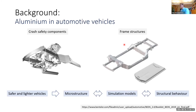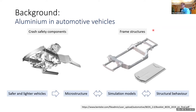The background for this study is the extensive use of aluminium alloys in automotive vehicles. Aluminium is used in many applications, for instance in crash safety components such as bumper beams, crash boxes, and longitudinals, and in frame structures — for instance in electrical vehicles it could be the battery tray. In these components, extruded aluminium profiles are often used, and this will be the topic of this lecture.